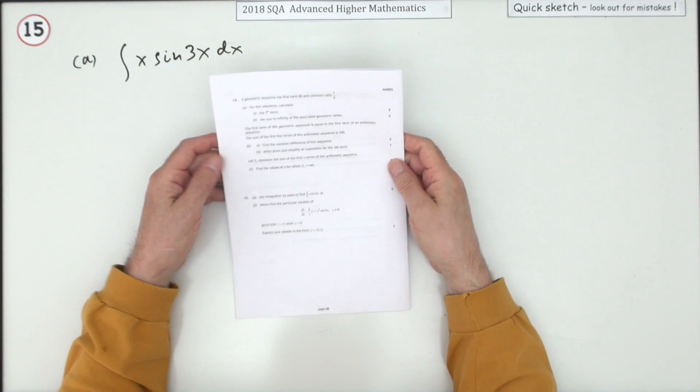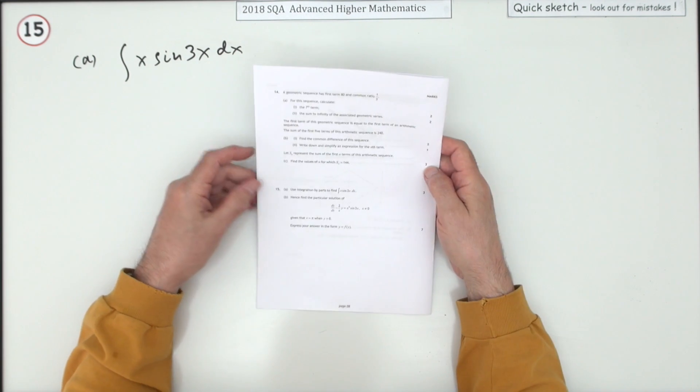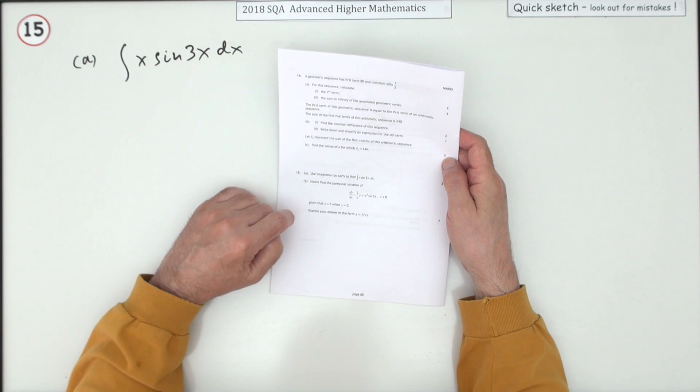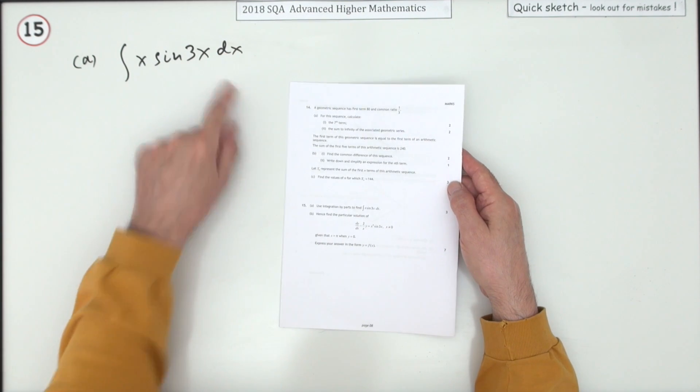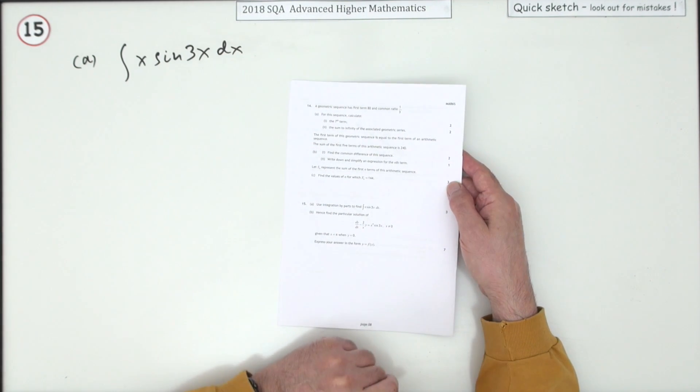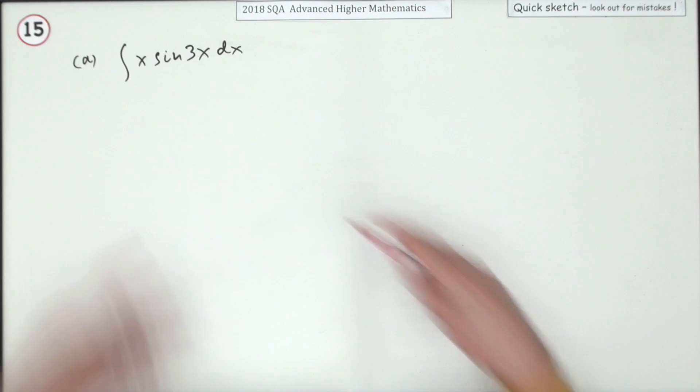Number 15 from the 2018 Advanced Higher Maths, 10 marks towards the end. Integration questions in two parts. In the first part, use integration by parts to find this integral. When it comes to a first-order linear differential equation, you can expect that to pop up somewhere for the final seven marks.